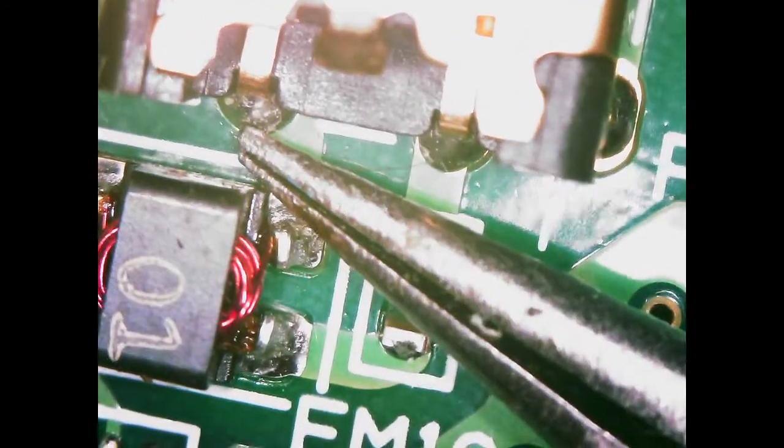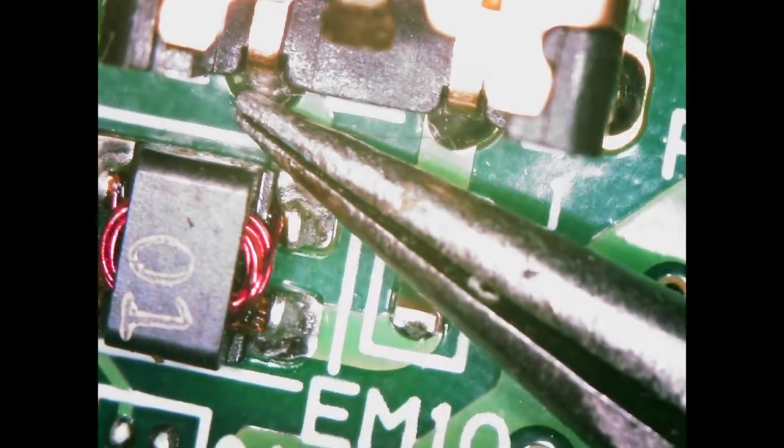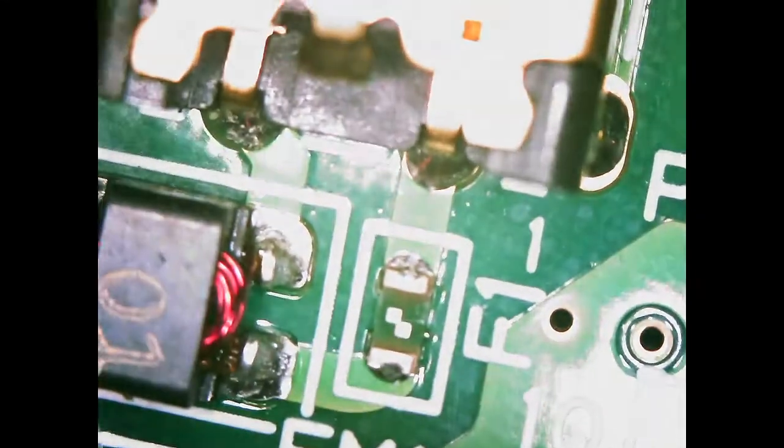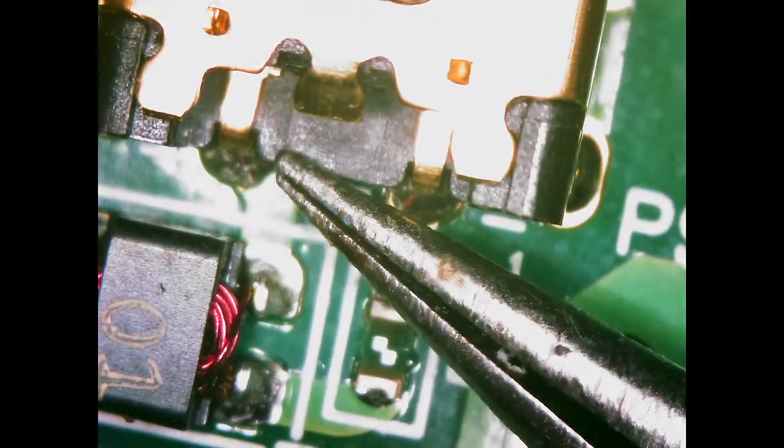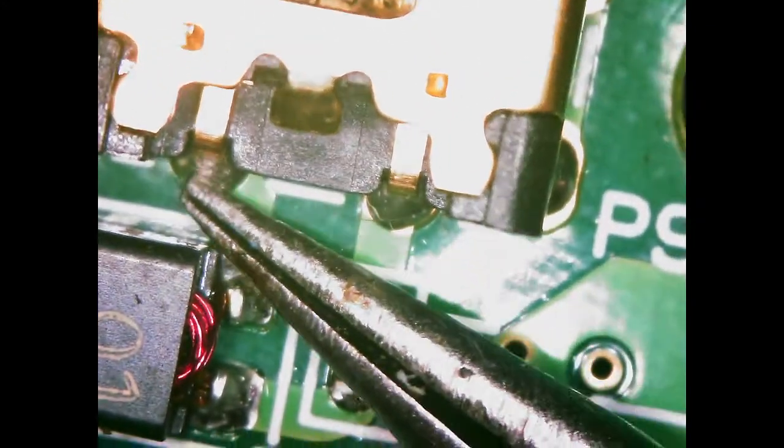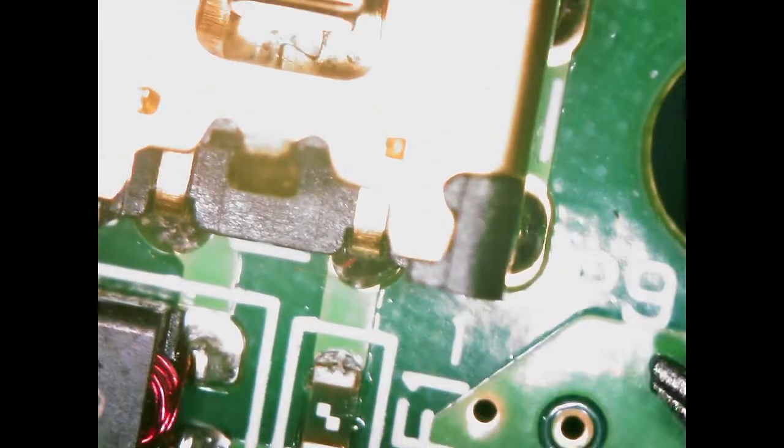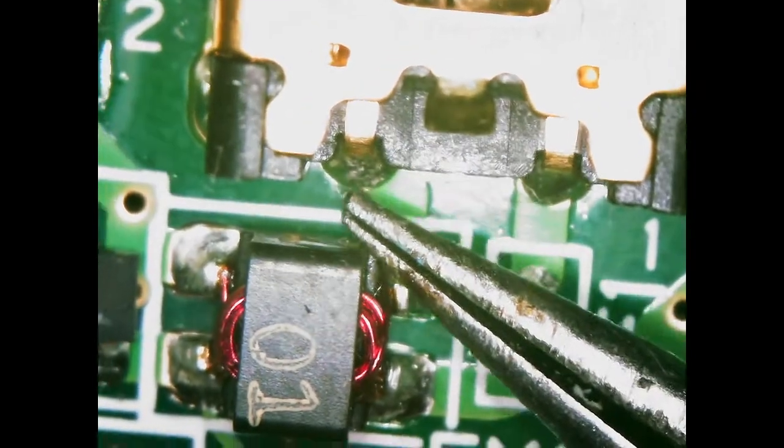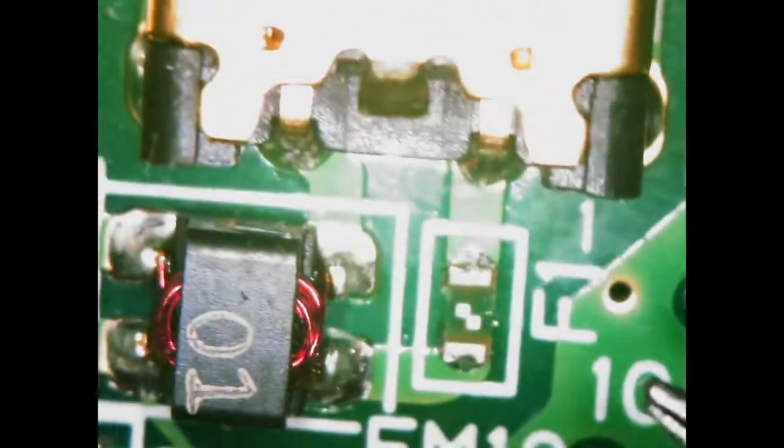We're gonna add some low melt solder. It's just a solder that melts at a much lower temperature, so that way there's less chance of damaging or losing other components. We're gonna add the low melt solder which will mix it in with the factory solder, and then we'll blow some hot air and pull this port out.